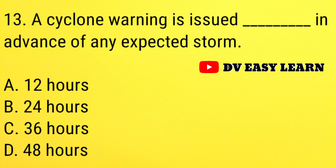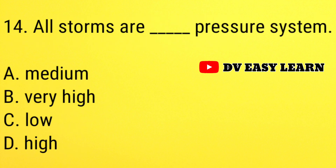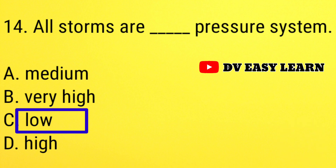Question number 13: a cyclone warning is issued dash in advance of any expected storm. Correct answer: 24 hours. Question number 14: all the storms are dash pressure systems. Correct answer: low.